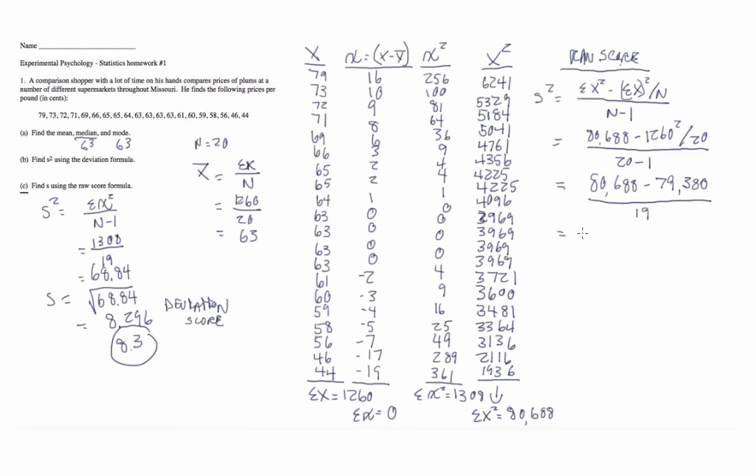And then, surprise, surprise, it comes out to be 1308 over 19. Where have I seen that before? Hint, hint. Which is equal to 68.84. And then we'll do our standard deviation. And that's just going to be 68.84 under a root sign, which again gives us 8.3 again.